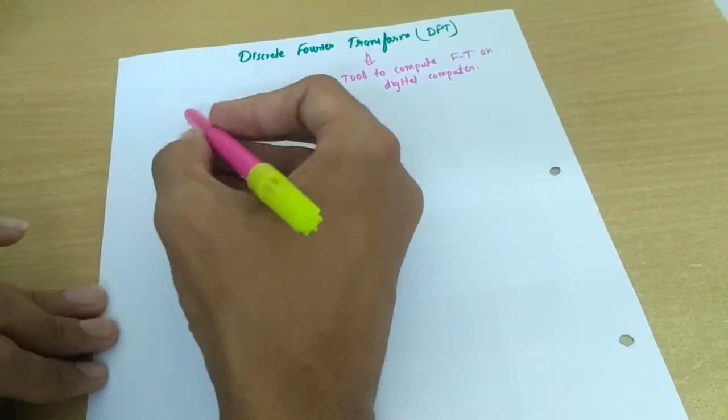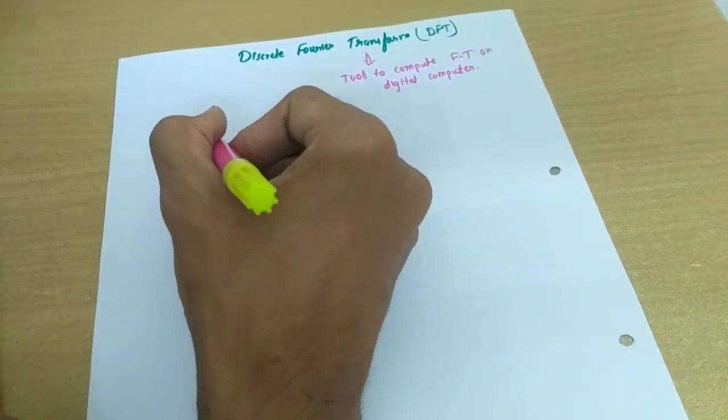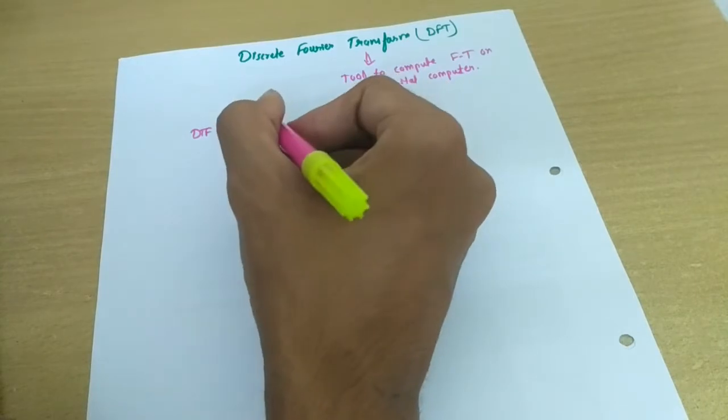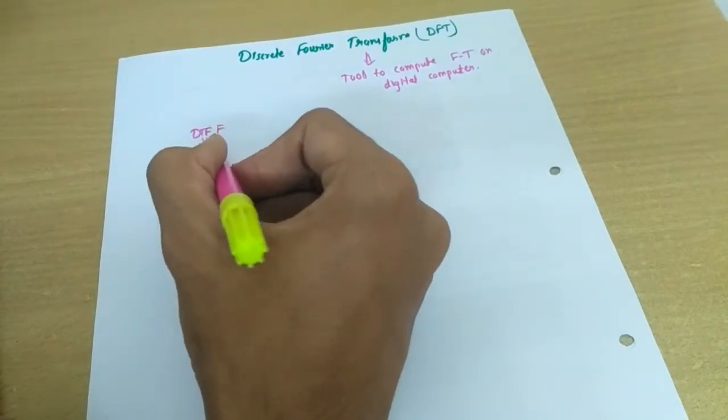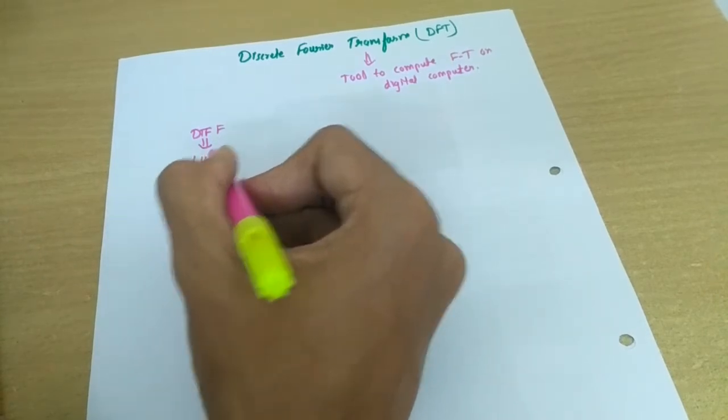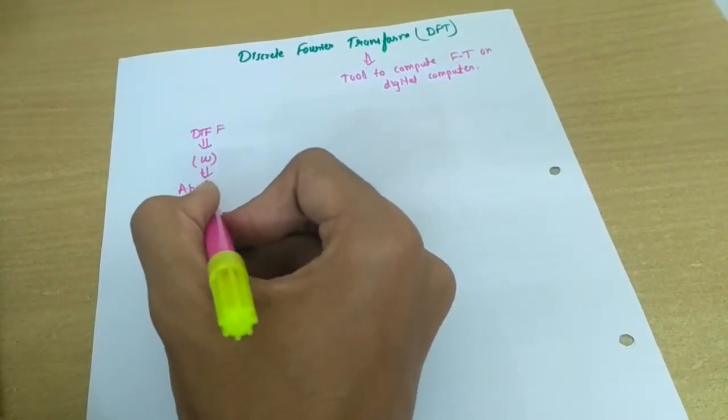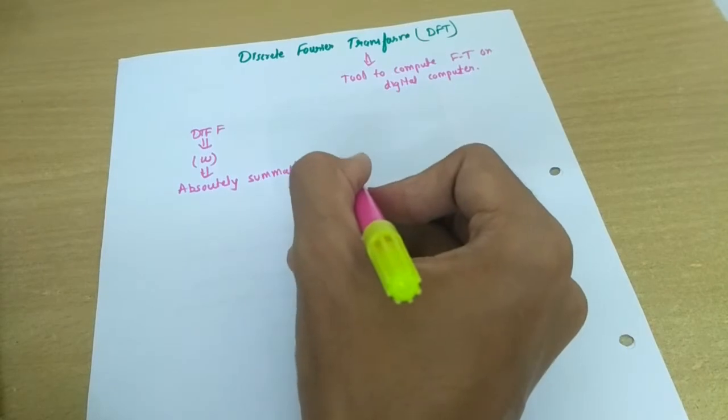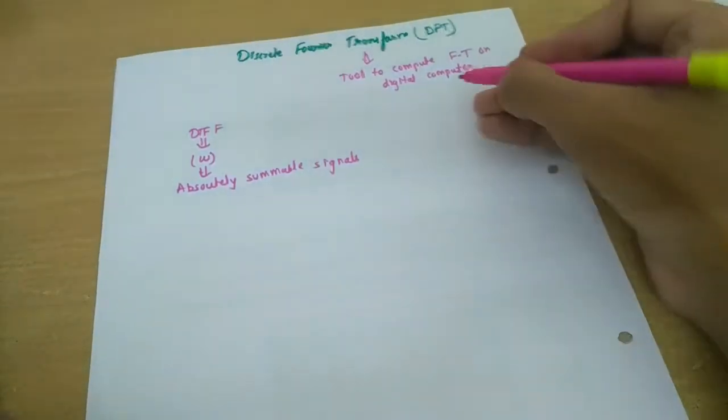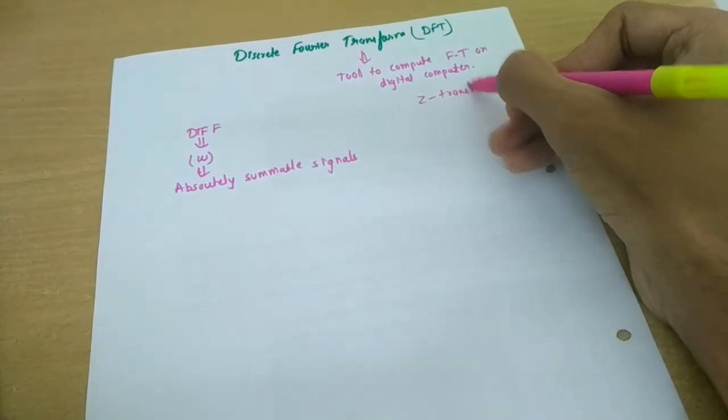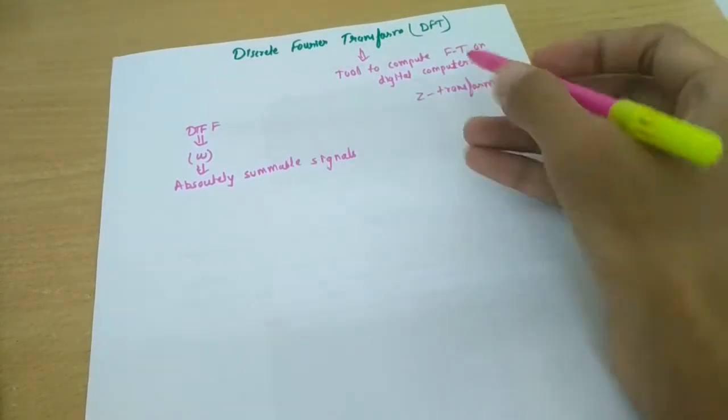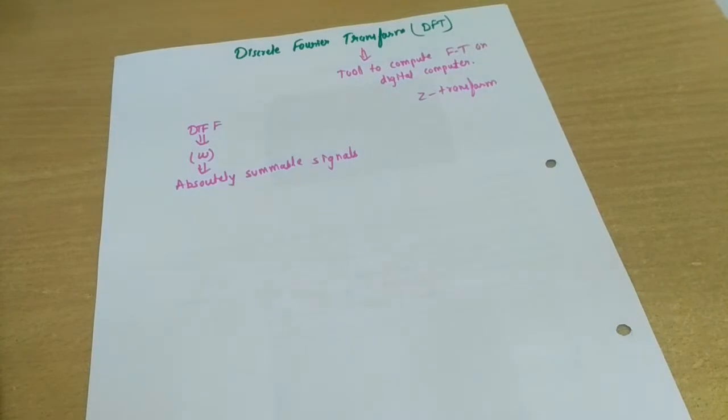So first of all, let's talk about DTFT drawbacks. DTFT, which provided us a frequency domain representation for absolutely summable signals - also let's talk about the limitations of Z transform, because as we are in discrete domain, Z transform is nothing but a universal transform, a generalized one of all transforms in discrete domain.